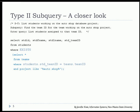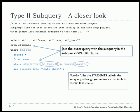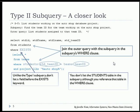Let's take a closer look at how this works. The outer query joins with the inner query in the where clause. You do not list the students table in the subquery, but you will reference it in the where clause. Unlike the type 1 subquery, you will not put a field where you'd say where team ID or student team ID in. You just say where exists, and then the join in the where clause of the subquery will take care of the rest.